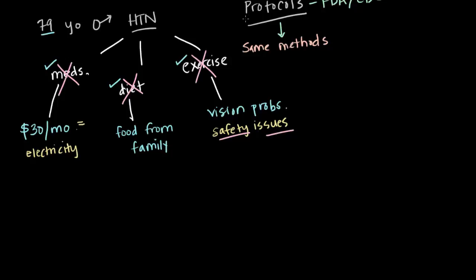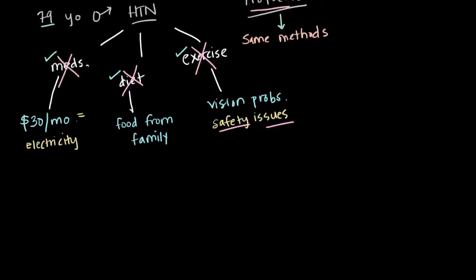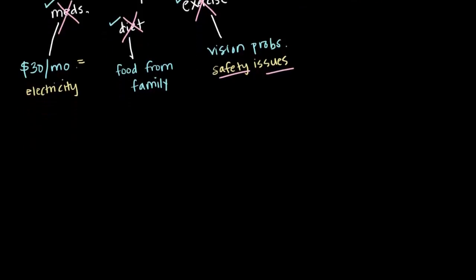So here we have a perfectly good protocol that has been shown to work and that for you and I would be fairly easy for us to do. We can get medications. We can change our diet even if we may not want to. We can exercise or we should be able to exercise. But for this patient, it's impossible. So what do we do then?